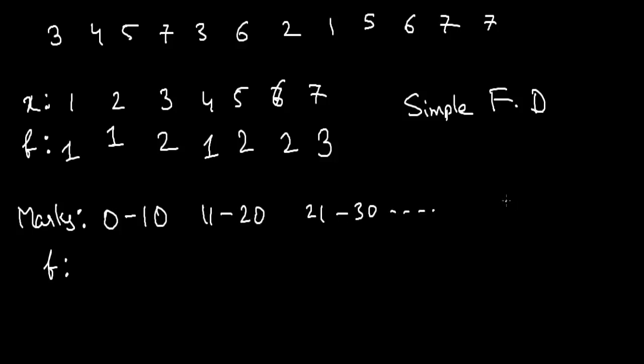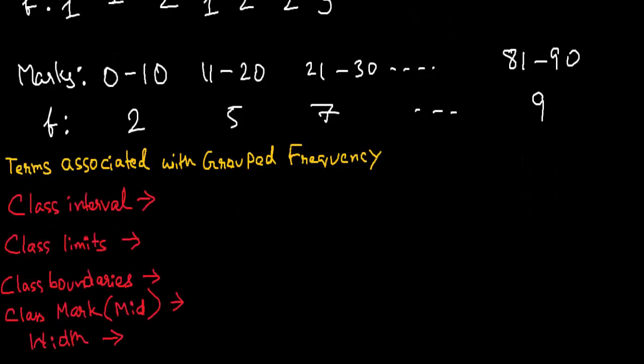And so on up to like 81 to 90. The frequency will be 2, 5, 7 and so on like 9. Now we will see some terms associated with group frequency. The first term is class interval.